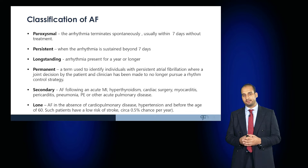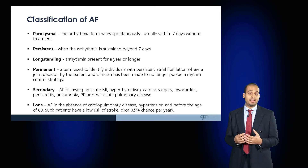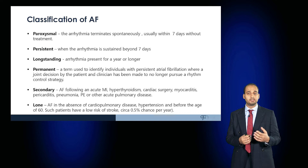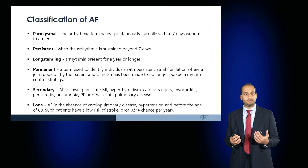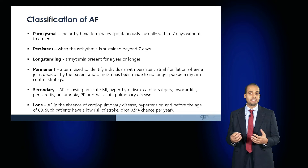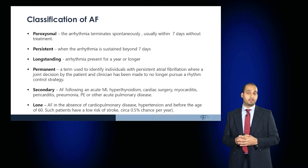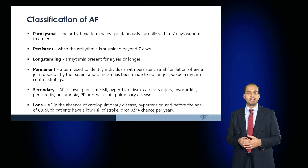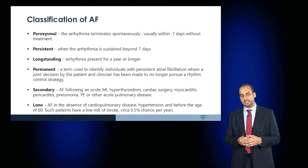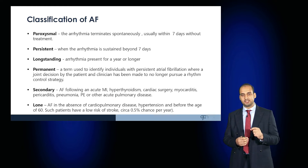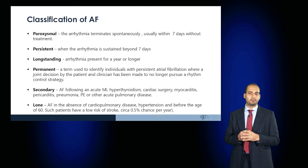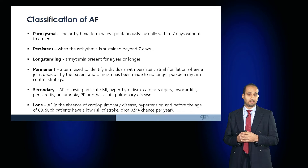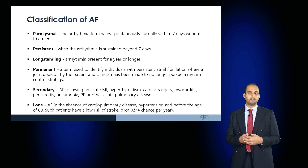Secondary AF occurs following events such as acute myocardial infarction or secondary to conditions including hyperthyroidism, cardiac surgery, myocarditis or pericarditis, infection, sepsis, PE, or other acute diseases. Lone atrial fibrillation is AF in the absence of any other cardiopulmonary disease, including hypertension, in young patients under 60 years old — these patients have a very low risk of developing a stroke.